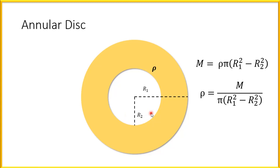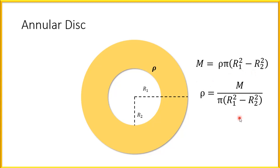We subtract the area of the smaller circle from the area of the larger circle. Therefore, the mass is equal to rho times (pi r1 squared minus pi r2 squared). From this, we can find the mass density rho as rho equals m divided by pi(r1 squared minus r2 squared).